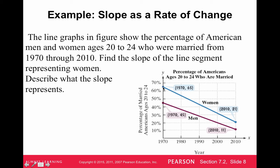Clearly women, the percent of women age 20 to 24 that are married is decreasing. We can see that. But we want to know per year, what's this decrease per year? Because we can see that it went from 65% to 21%.